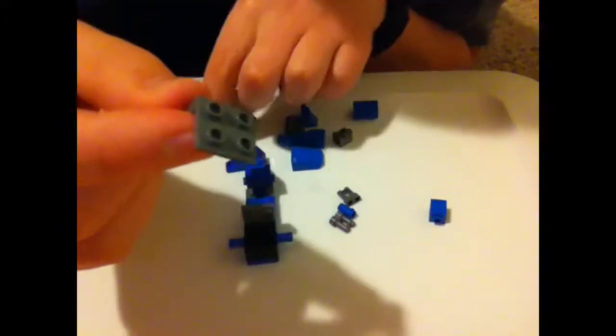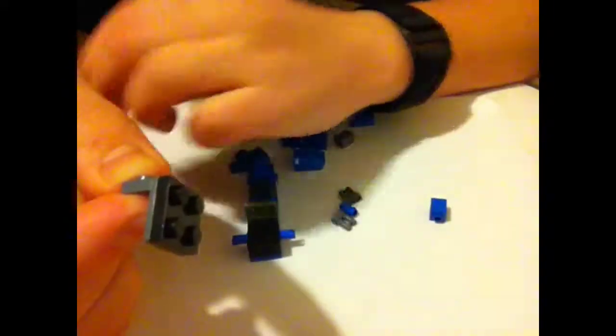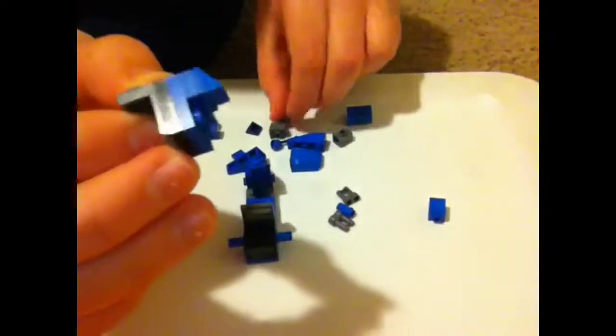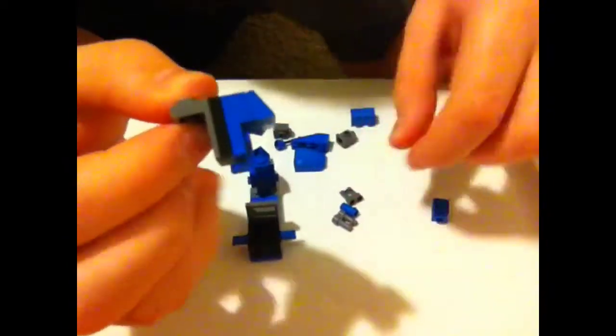Then we're going to take this piece. You can really make both of these blue. I just at the time had a black one and blue one. And then you're going to put two of these on here. And then you're going to put this and this on here like that in the front.